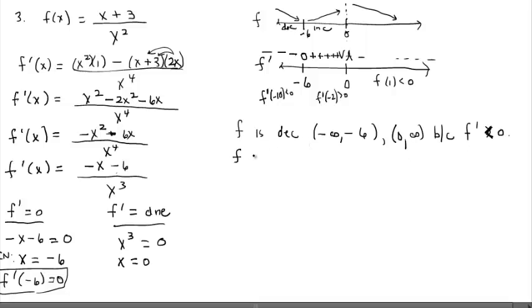Alright, and so we also have an increasing interval. So the function is actually going up, and we can see through the visual here too, from negative six to zero because f prime is positive. The slope values are all positive.